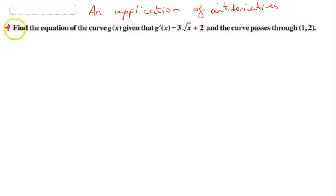Let's take a look. Find the equation of the curve g(x), given that g'(x) equals 3√x + 2, and the curve, that is g(x), passes through (1, 2). Okay, so just an idea of what we know here. We know there's some sort of Cartesian plane, and we know that a function, g(x), passes through the point (1, 2).